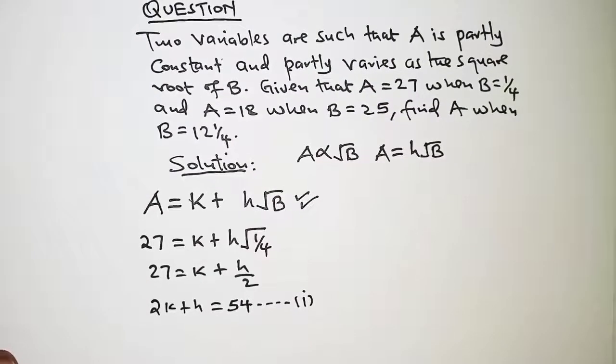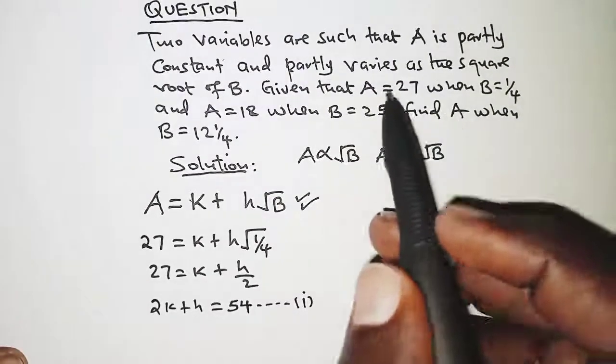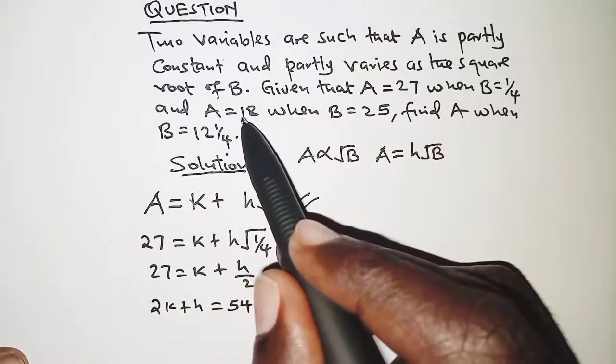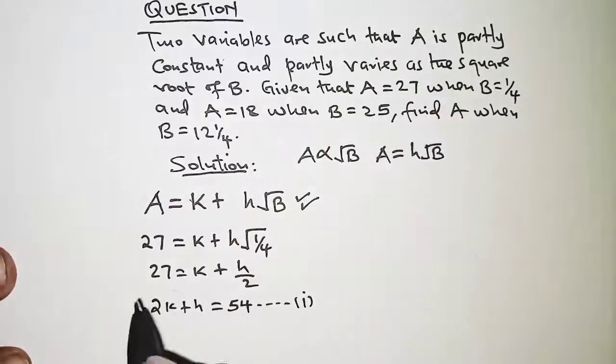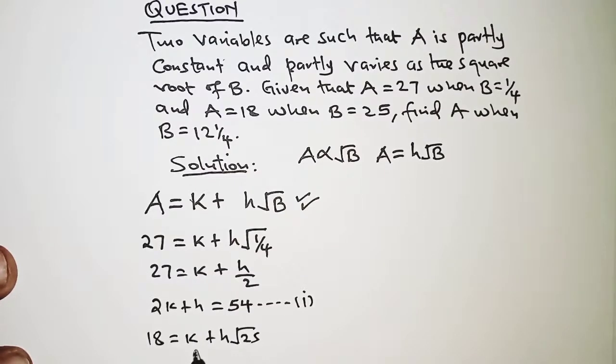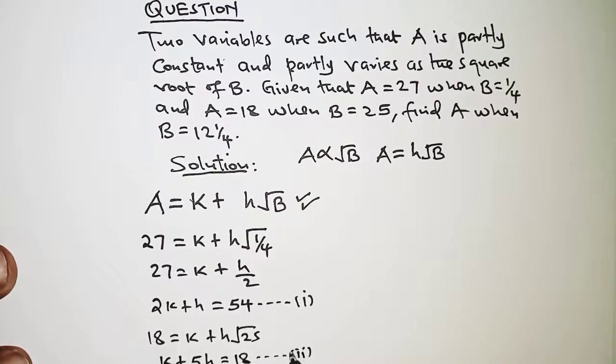The second equation we are going to obtain by simply substituting the next values. When A is 18, B is 25. Next we have 18 is equal to k plus h root 25, and this becomes k plus 5h is equal to 18. That is our second equation.